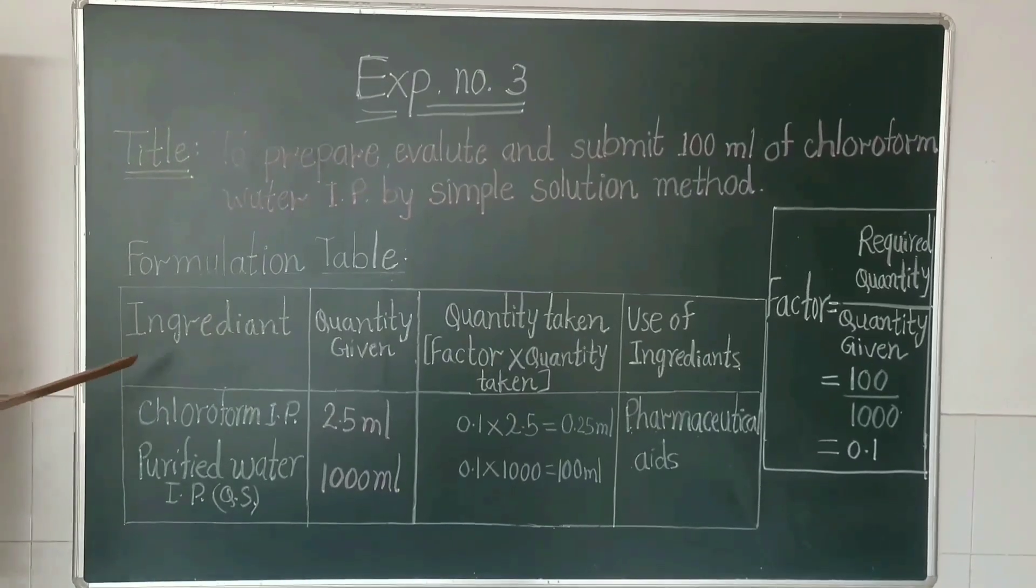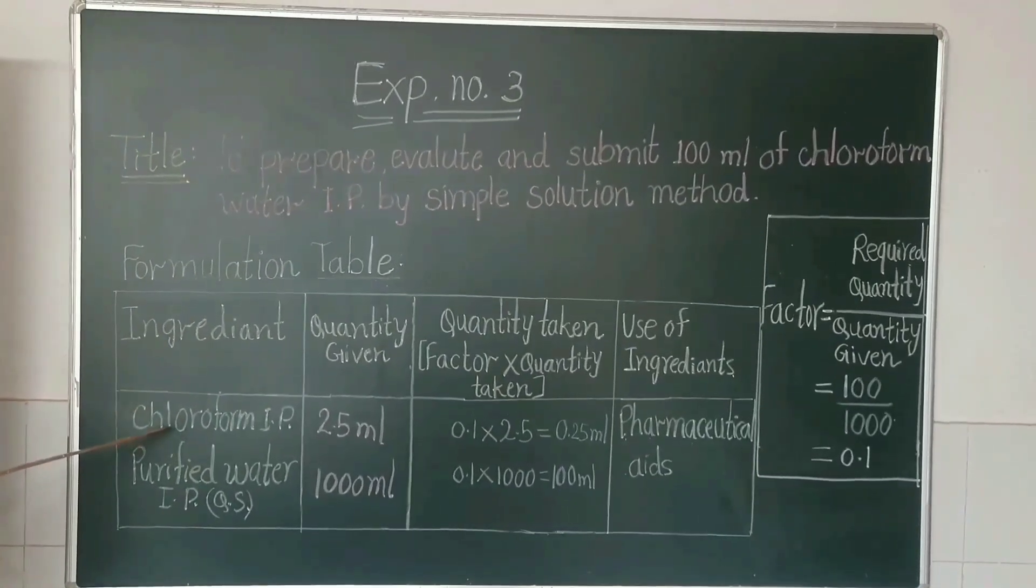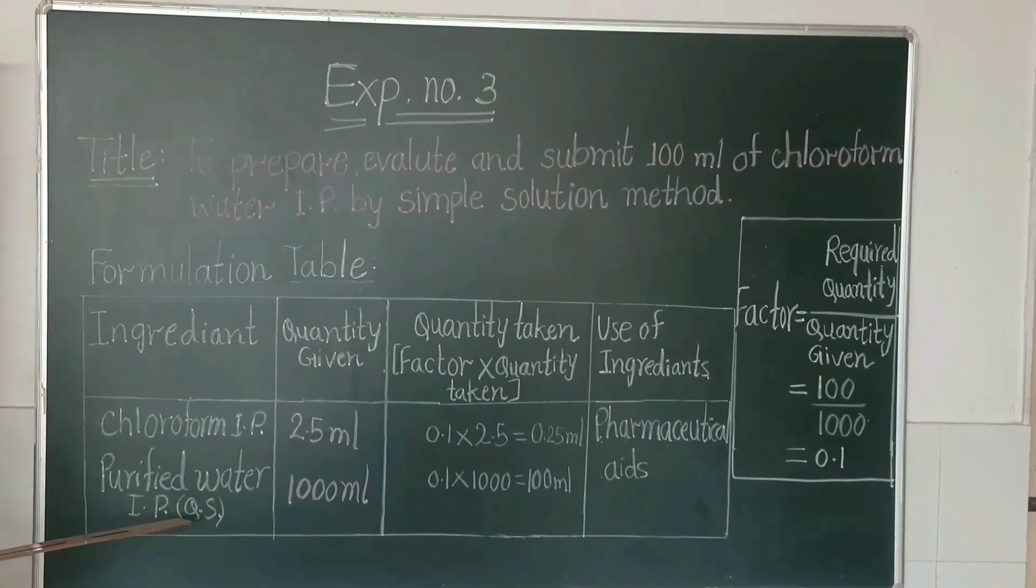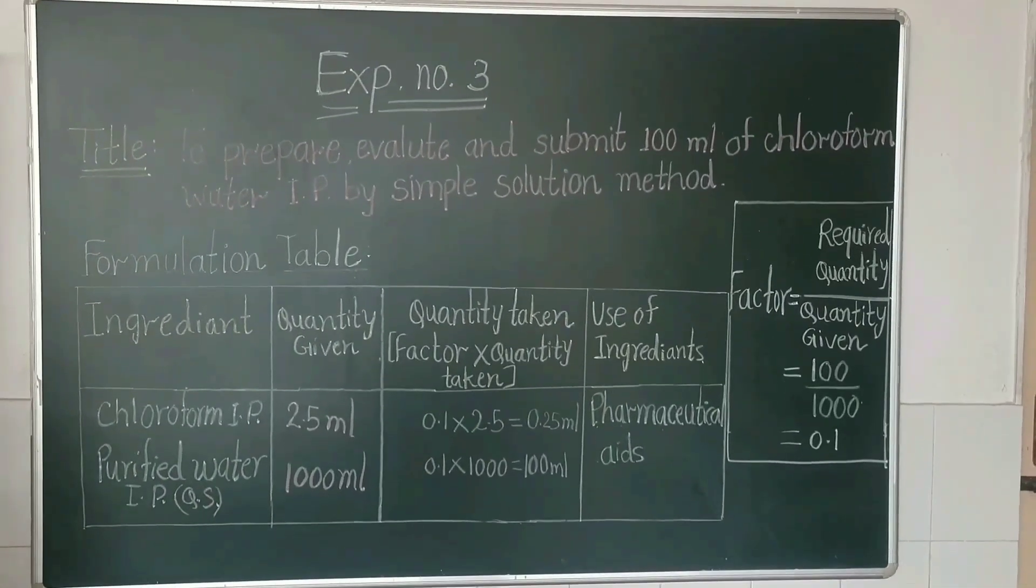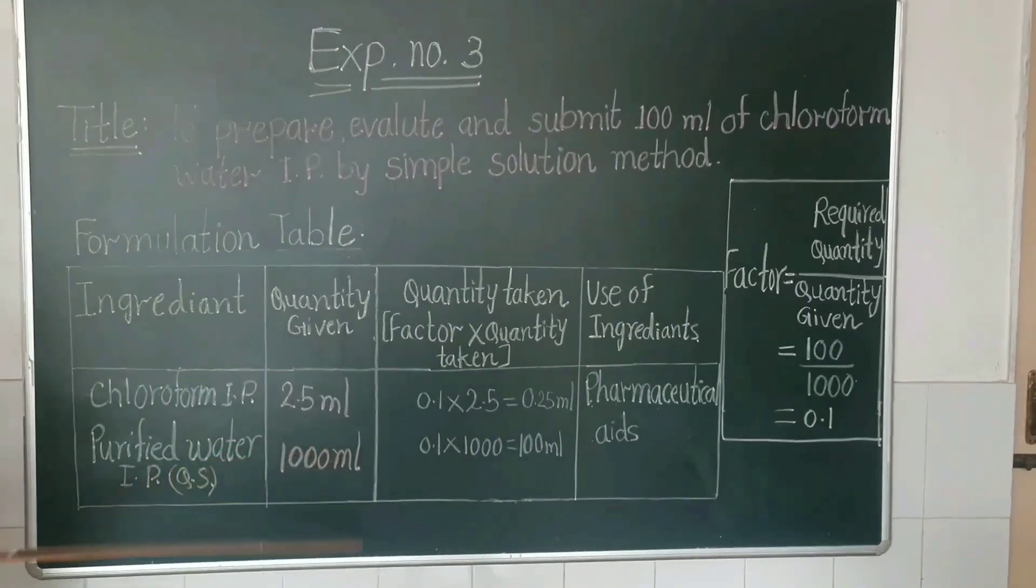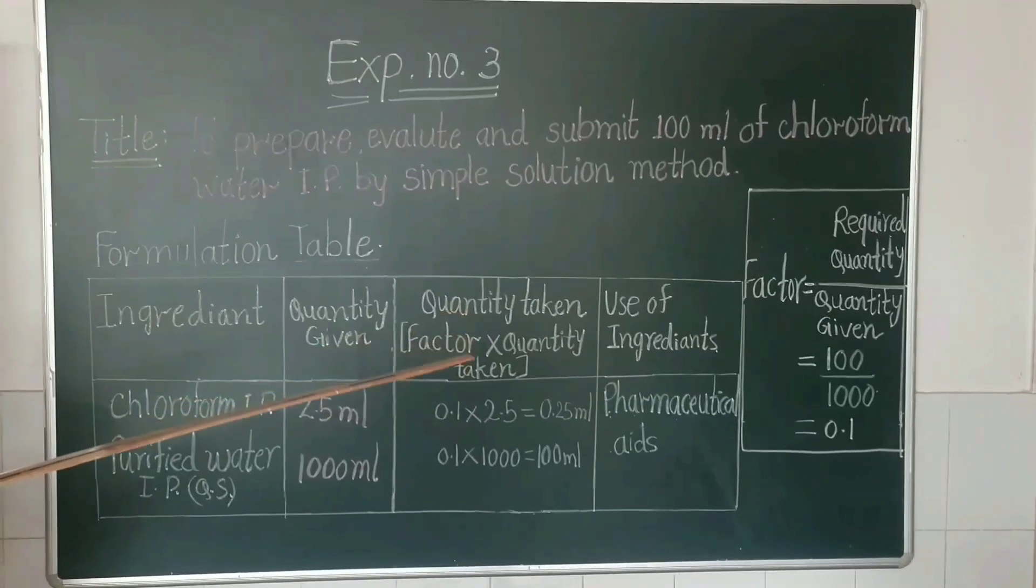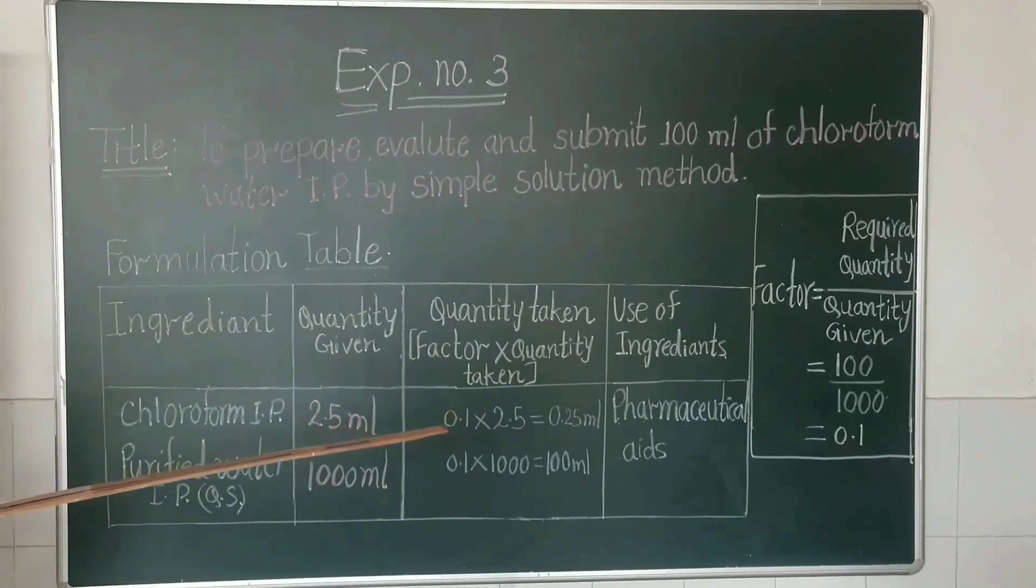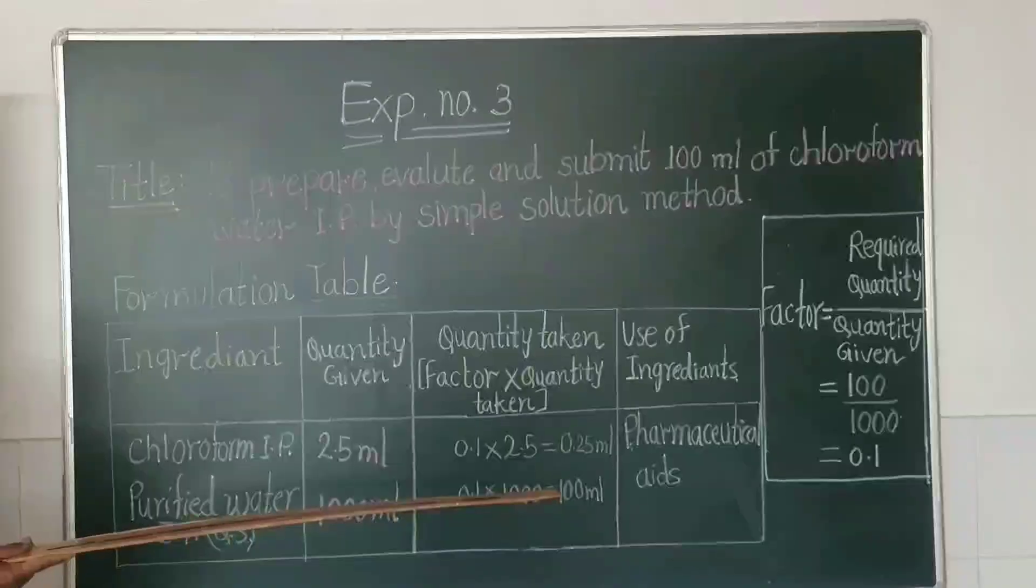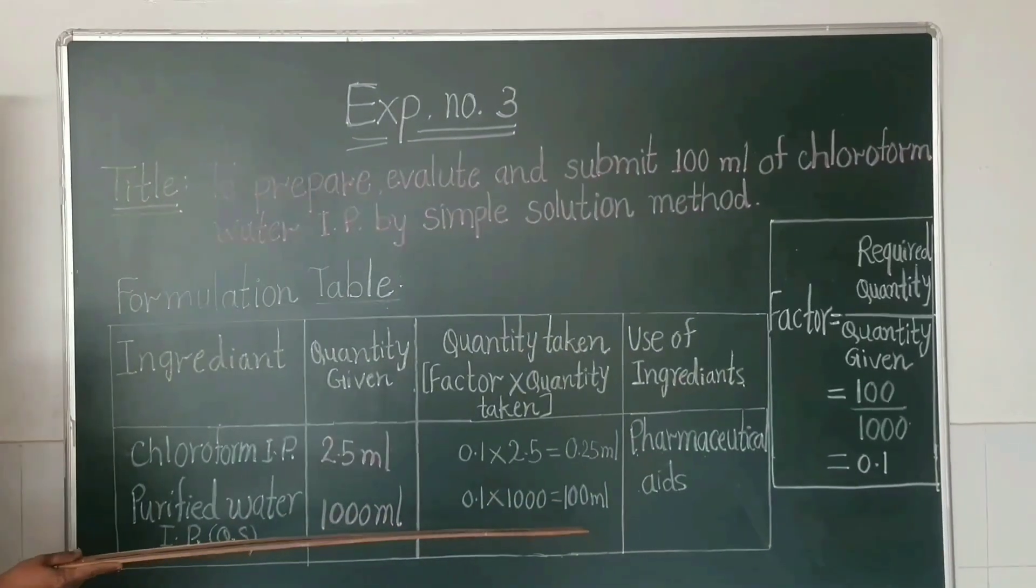The formulation is given. Ingredient: chloroform IP 2.5 ml, purified water IP quantity sufficient. We have to find out the factor for quantity taken. The factor is required quantity divided by quantity given, which equals 0.4. The category is pharmaceutical aid.